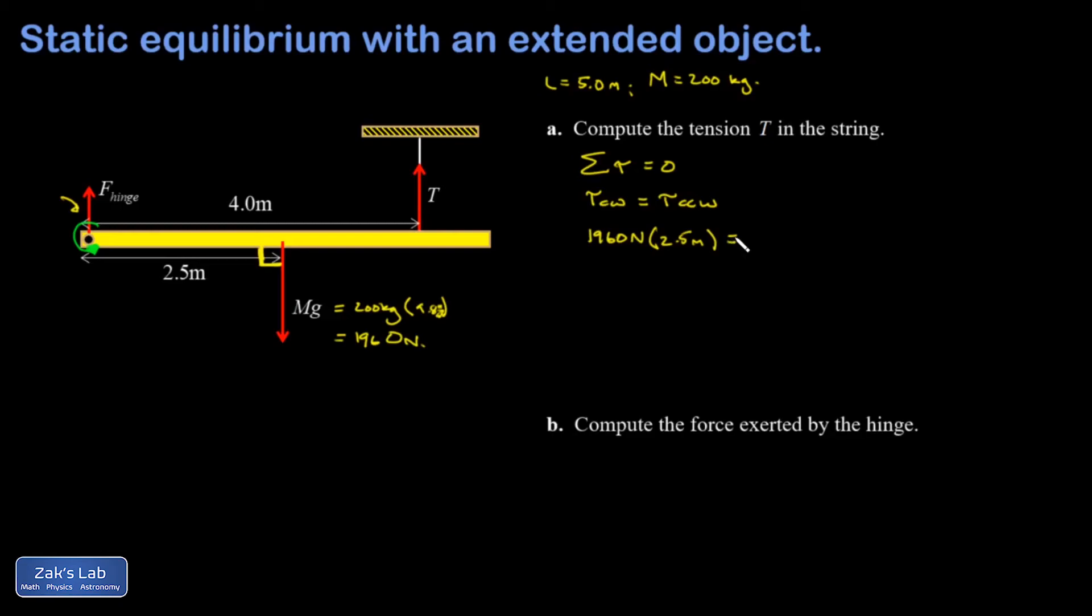What about my counterclockwise torques? I have the string attached at the 4 meter mark, and it's exerting this tension perpendicular to the lever arm. The size of the lever arm again was 4.0 meters, and there are no other forces exerting a torque with respect to the rotation axis that I chose.